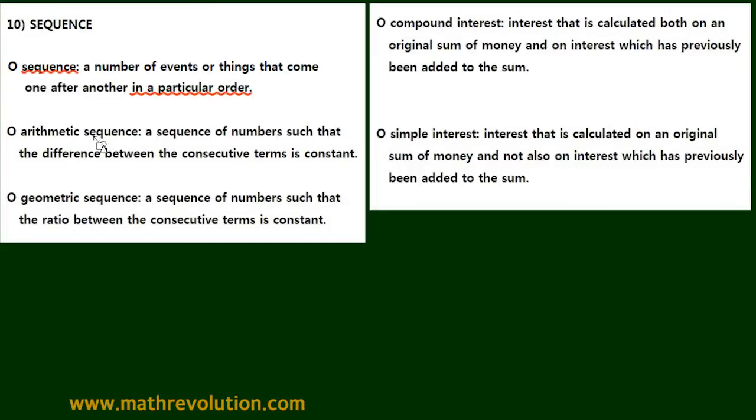We're going to look at an arithmetic sequence and a geometric sequence. An arithmetic sequence is where the difference between the consecutive terms is constant, whereas a geometric sequence is where the ratio between the terms is constant.